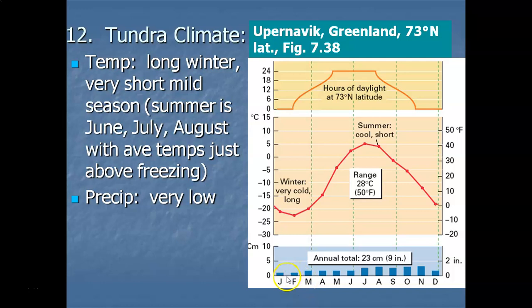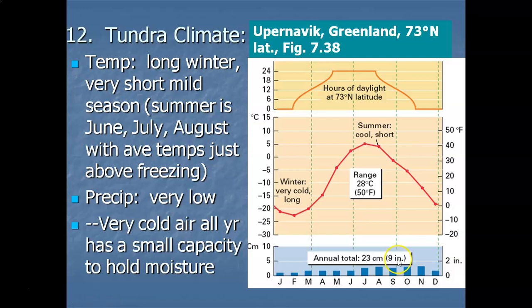Precipitation is going to be in the form of wave cyclones — that's kind of the only mechanism in this latitude range that might produce precipitation. Here the average in Greenland is only nine inches per year. It's almost desert-like, and this is something we had seen with the boreal forest climate: when you've got temperatures that are so frigid, the air has a very small capacity to hold moisture, so the fronts that move through tend to be very dry, producing very low annual totals.